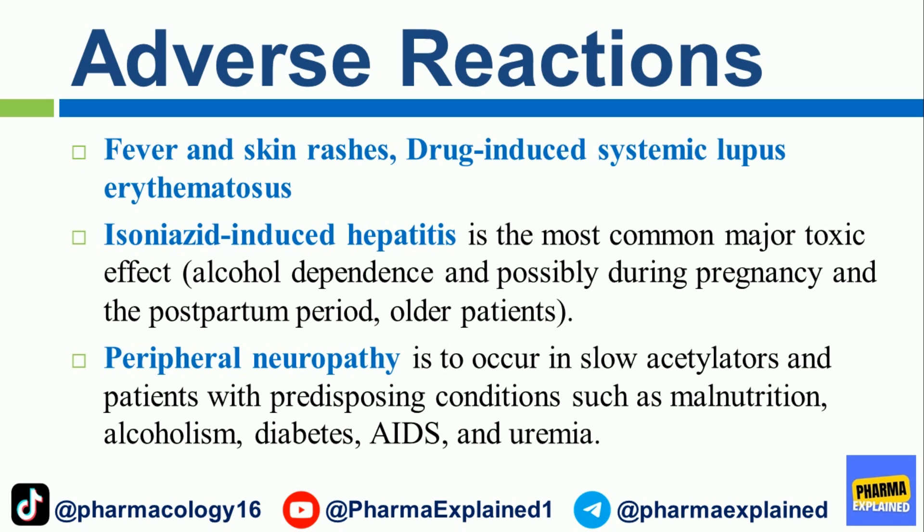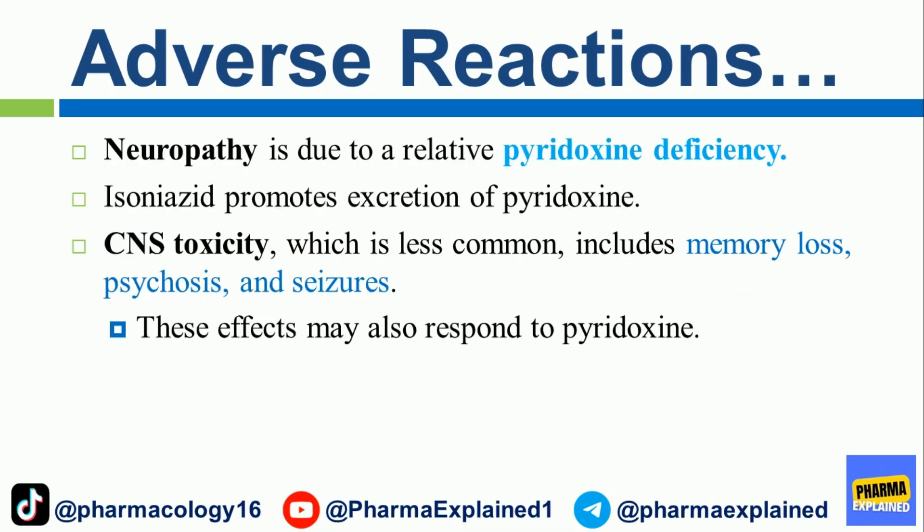Adverse reactions include fever and skin rashes, and drug-induced systemic lupus erythematosus. Isoniazid-induced hepatitis is the most common major toxic effect, with increased risk in alcohol dependence, possibly during pregnancy and the postpartum period, and in older patients. Peripheral neuropathy is more likely to occur in slow acetylators and patients with predisposing conditions such as malnutrition, alcoholism, diabetes, AIDS, and uremia. Neuropathy is due to a relative pyridoxine deficiency, as isoniazid promotes excretion of pyridoxine. CNS toxicity, which is less common, includes memory loss, psychosis, and seizures; these effects may also respond to pyridoxine.